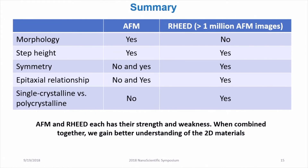In order to determine whether the sample is single crystalline or polycrystalline, AFM may not be able to do that. But for RHEED, while we cannot obtain morphological information, we can get step height, symmetry, epitaxial relationship, and determine whether the sample is single crystalline or not. These two techniques are complementary to each other, and when combined together we can gain a better understanding of two-dimensional materials.